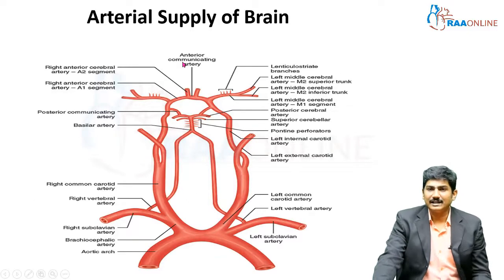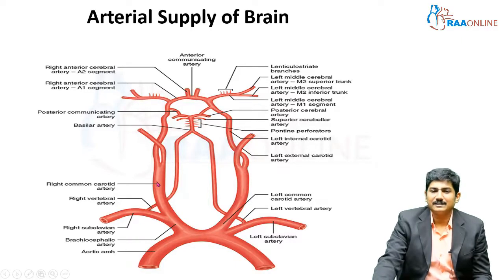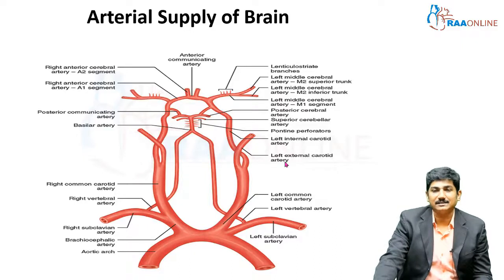This is the arterial supply of the brain. Starting from the aortic arch, the brachiocephalic on the right side gives branches to the right subclavian and right common carotid. On the left, the left common carotid comes directly from the aorta. It goes up and differentiates into the left internal carotid and left external carotid. The internal carotid artery bilaterally enters the brain.